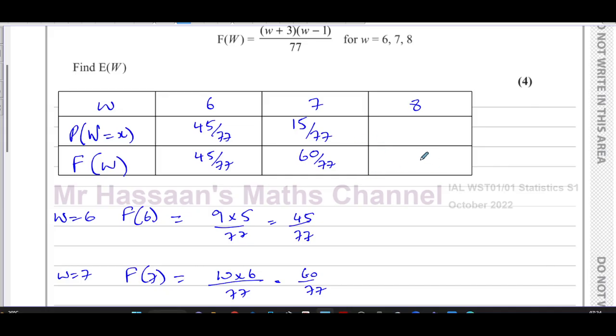And we know that the cumulative distribution for F(W) must be 1. The final one must be 1. They have to add up to 1. And as we confirmed earlier, if you put 8 in here, you're going to have 11 times 7 which is 77 over 77, which is 1. So we've got to think, what do you have to add to 60 over 77 to give you 1? Well, that's going to become 77 over 77, so you have to add 17. So the last one is 17 over 77.